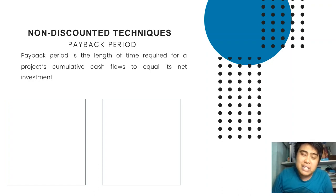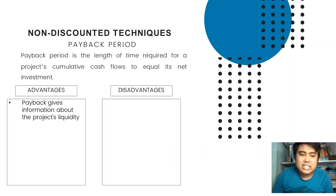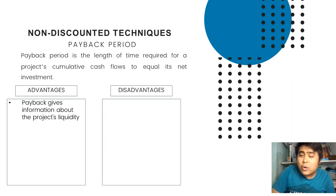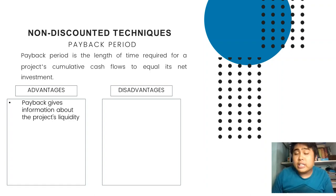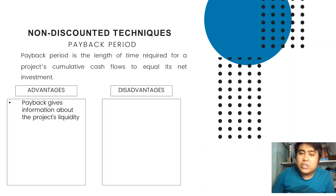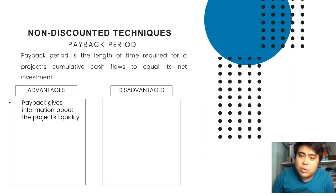Based on that definition, we can say that the main advantage of payback period is that it gives information about the project's liquidity. In other words, payback period focuses on liquidity rather than profitability. This is the opposite of ARR — ARR focuses on profit, while payback focuses on liquidity.